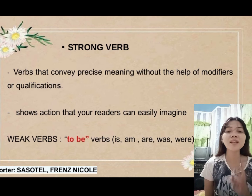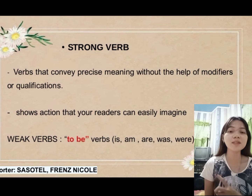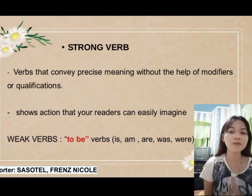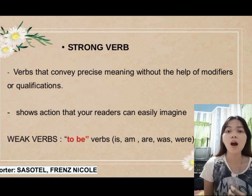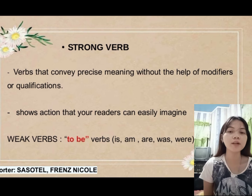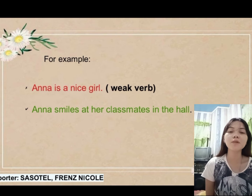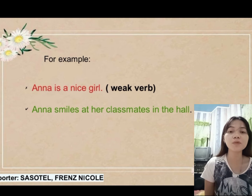One example of weak verbs is the to-be verbs like is, am, are, was, were, and more. So take a look at these two sentences in the example.